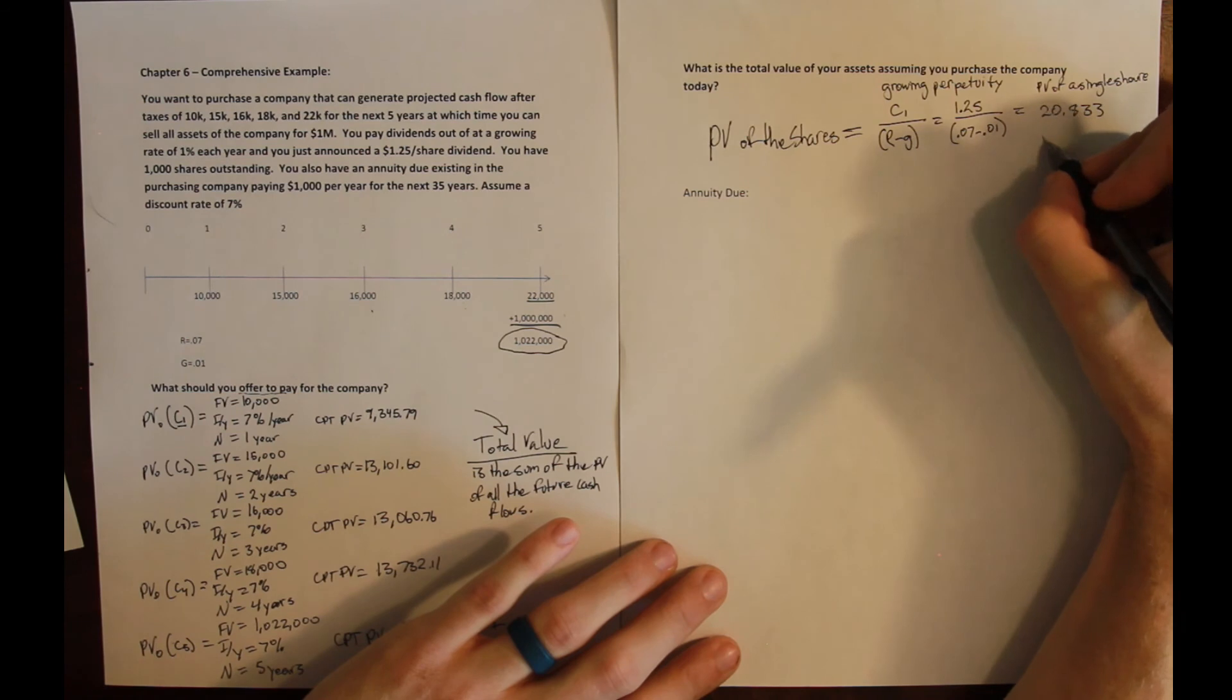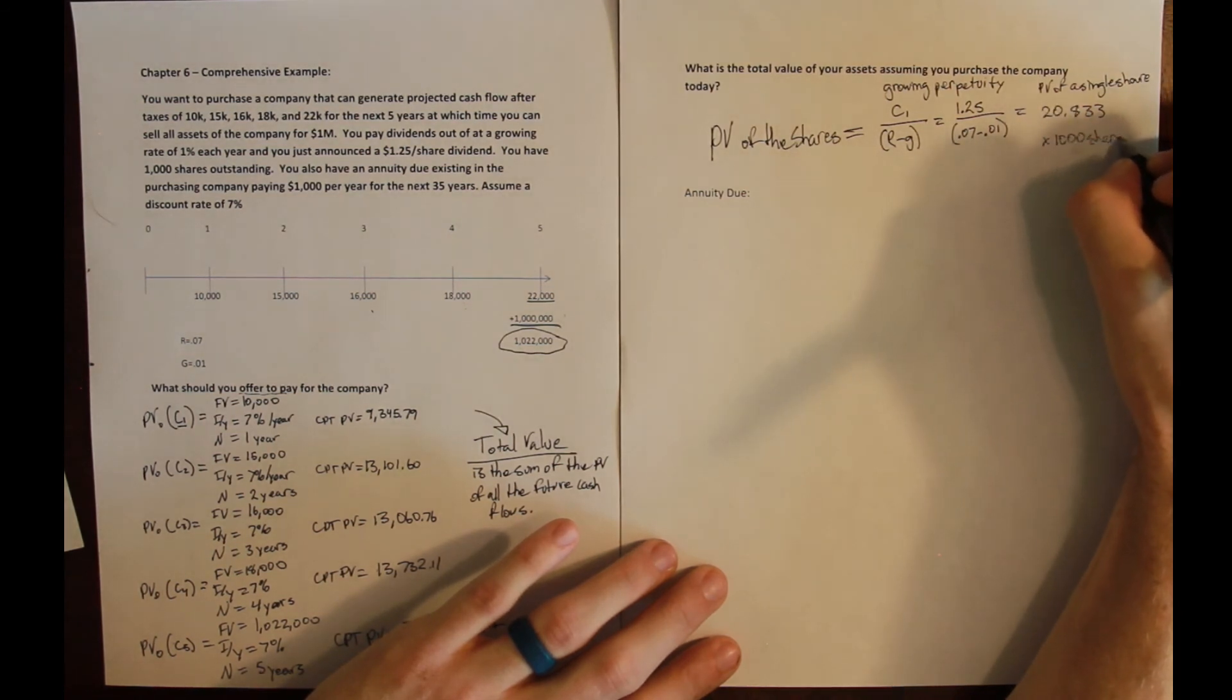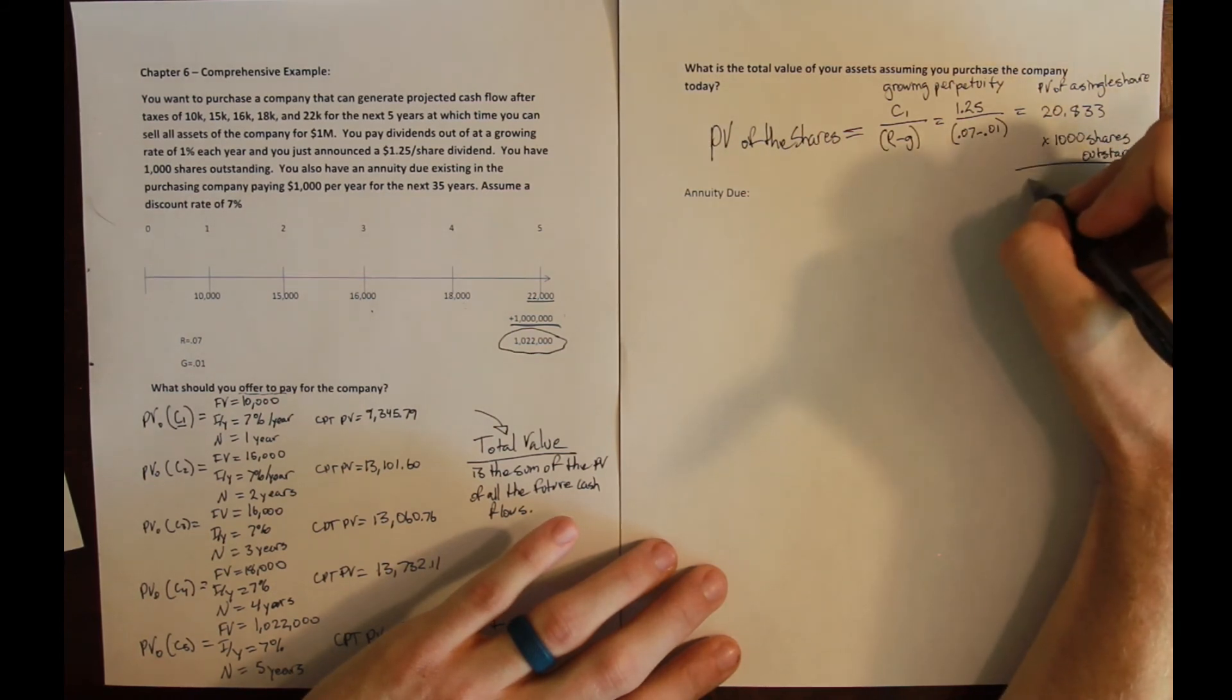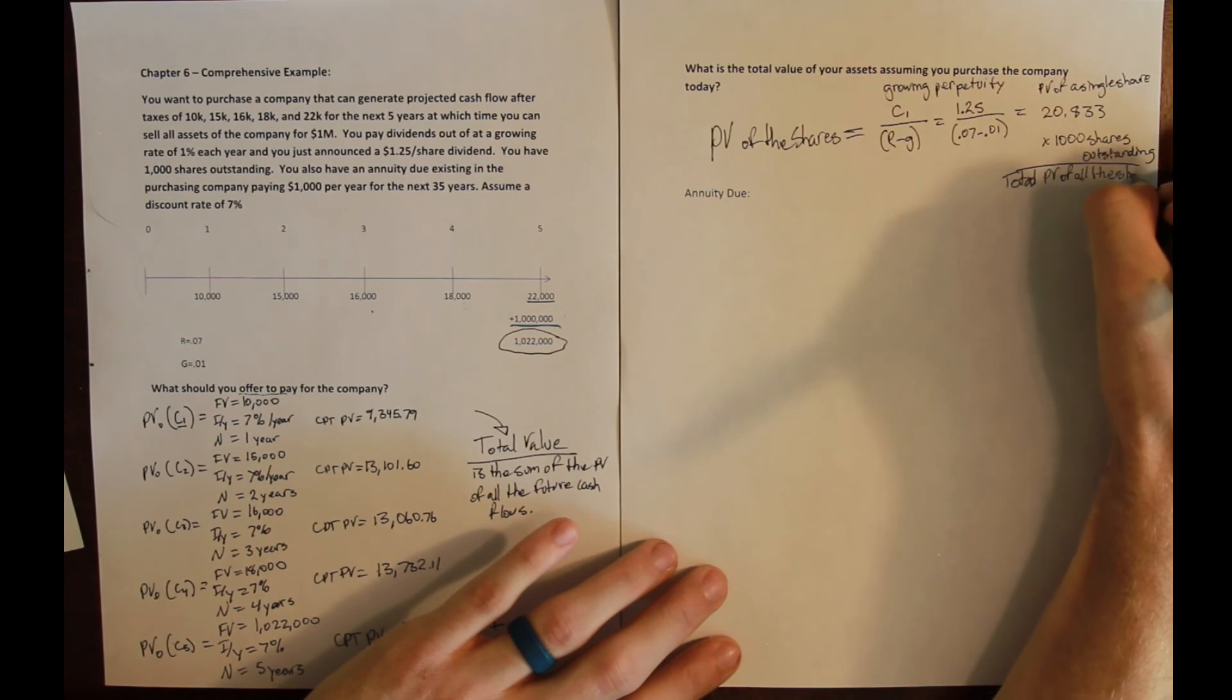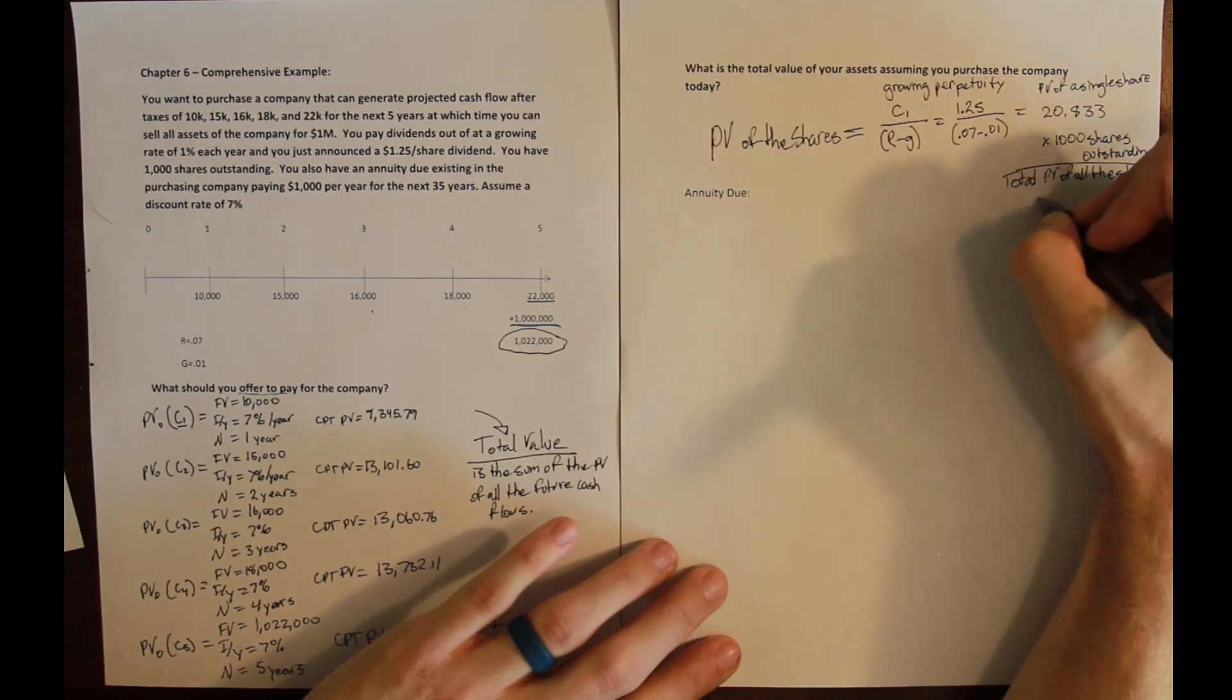But we have 1,000 shares outstanding. So we have the total present value of all the shares equal to $20,833.